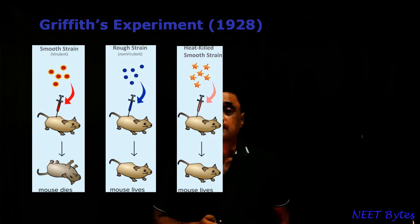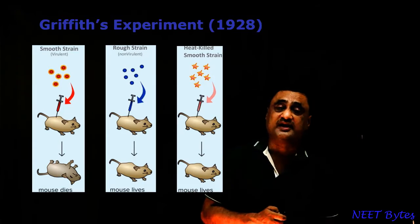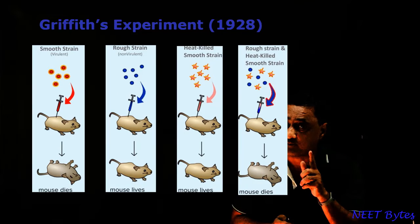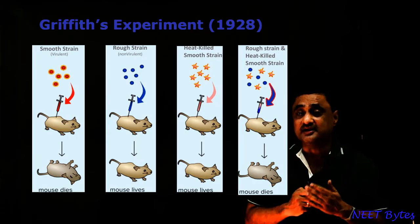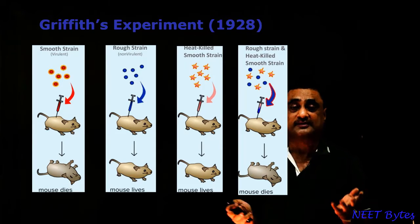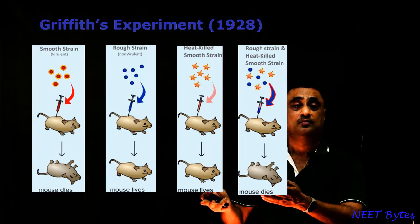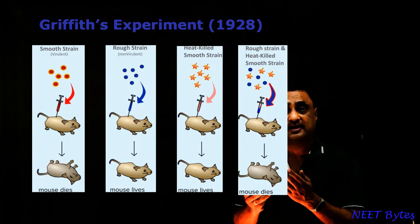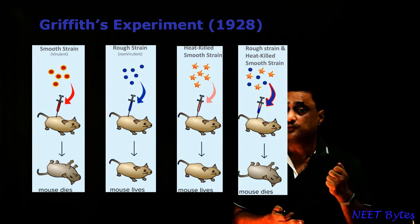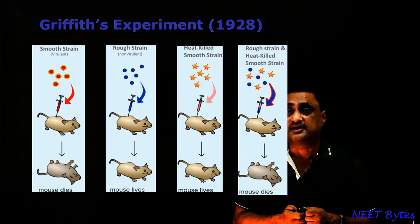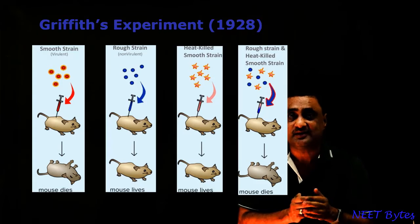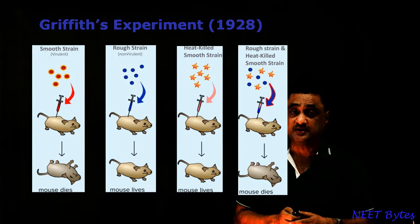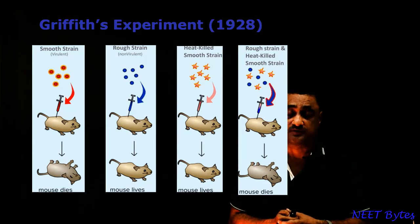But the big surprise came when he injected the rough form along with the heat-killed S-form. Because you see, ideally, when he was using the two separately, in both cases the mouse was surviving — the heat-killed smooth form: mouse survived; rough form: mouse survived. But when he used both things together and injected them, the mouse died. That was a big, big surprise for him.